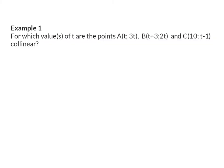Example 1. For which value or values of t are the points A, B and C collinear? So to get started here, we need to make sure that we know the theory for the word collinear. The word collinear means that all three of these points are on the same line.